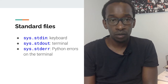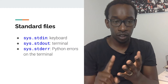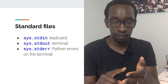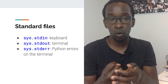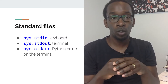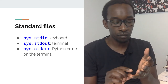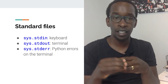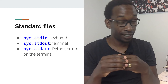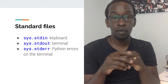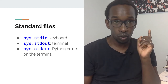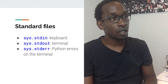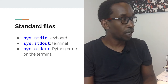We've covered a lot: what a file is, and its properties — name, location, extension, permissions, and owner. We've done some work on the terminal, looked at file formats and schemas, text and binary files, and standard files. Now let's look at the practical parts of working with files in Python.